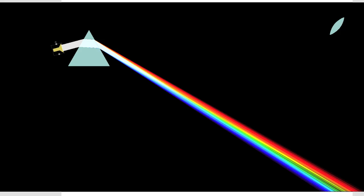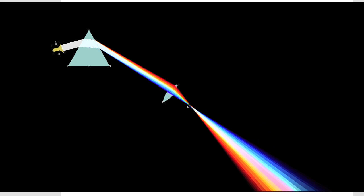Now an interesting thing that Isaac Newton did after he split white light up into the colors—he wanted to prove that white light is made up of the colors, so he put a lens right in the beam of the colors.